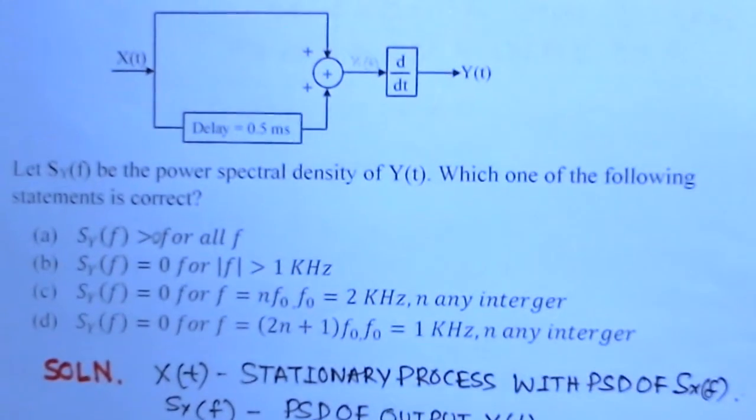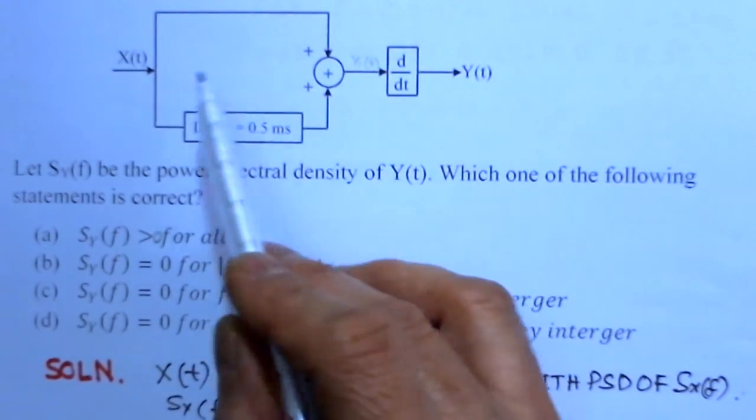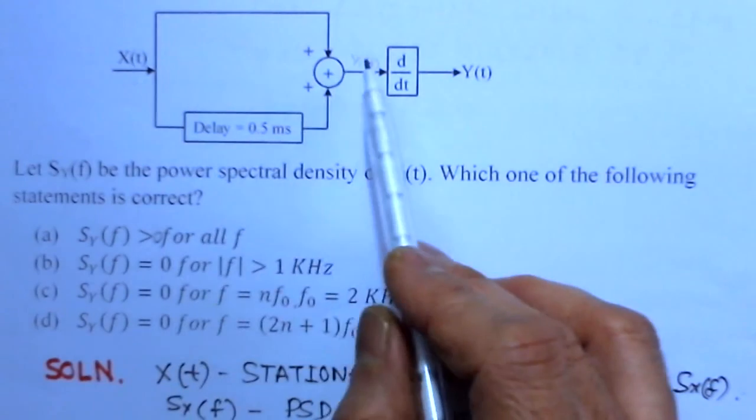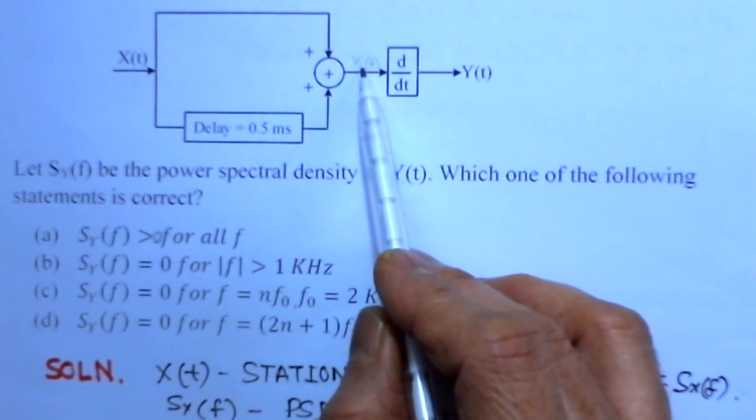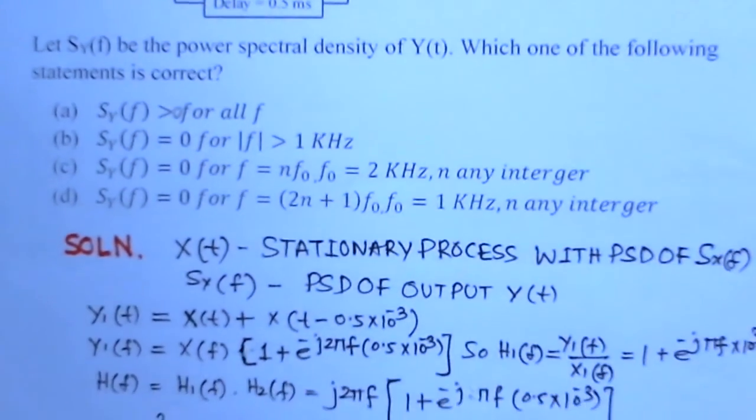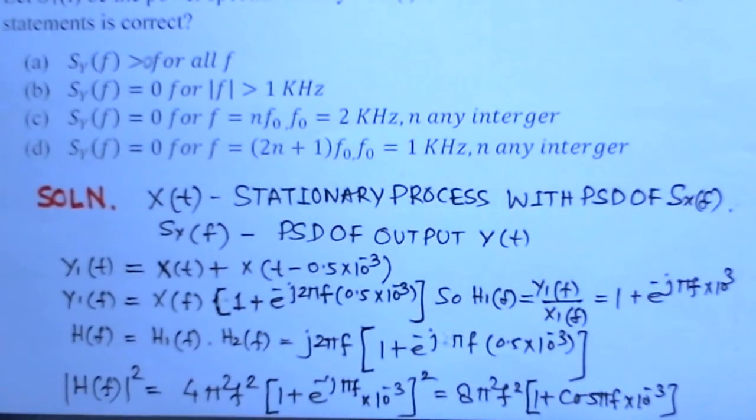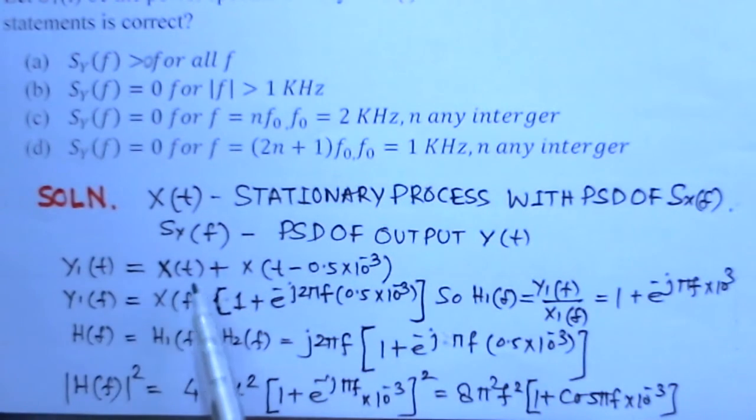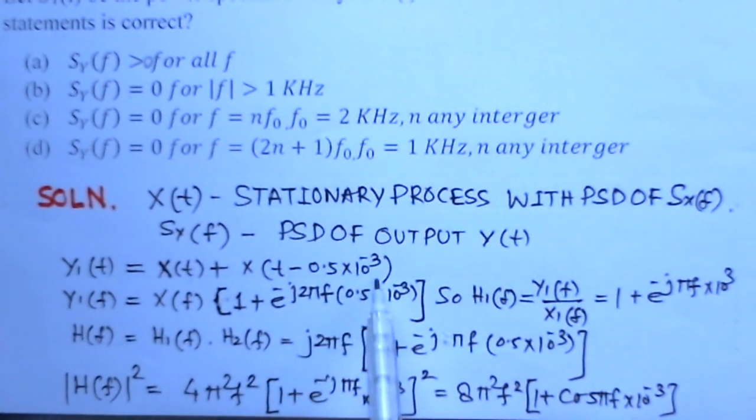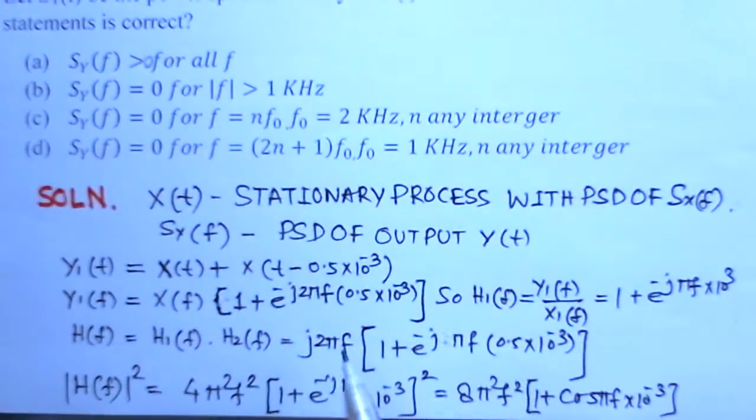We presume here X(t) is the input, Y1(t) is the output at this point, and Y(t) is the final output. So we can say Y1(t) is equal to X(t) plus X(t minus 0.5 times 10 to the minus 3 because of this delay.